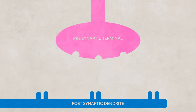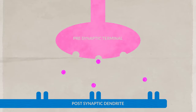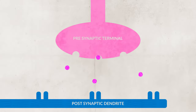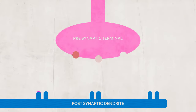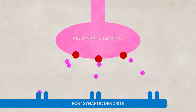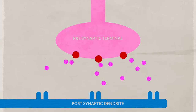Reuptake is the process of the presynaptic neuron reabsorbing neurotransmitters that have been released into the synapse and were bound to a synaptic receptor site. Some drugs will act as a reuptake inhibitor — that means they block neurotransmitters from being absorbed back into the presynaptic axon terminal. This is really important because it regulates the amount of neurotransmitters present in the synapse, therefore controlling how long the signal from the neurotransmitter will last.